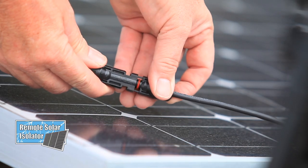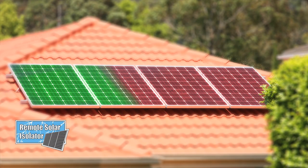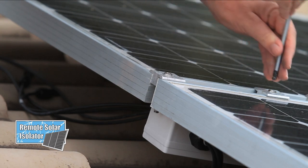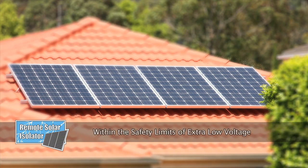The remote solar isolator, using its simple plug and play wiring, is quick to install and safely isolates the entire solar installation through a tested and approved patented control box, leaving the maximum voltage on the roof restricted to the safety of extra low voltage.